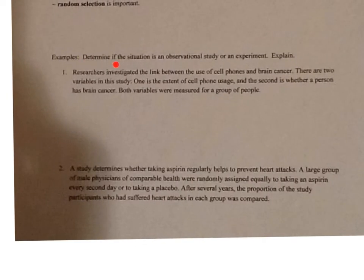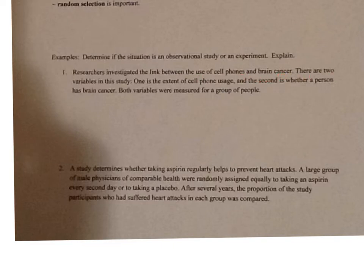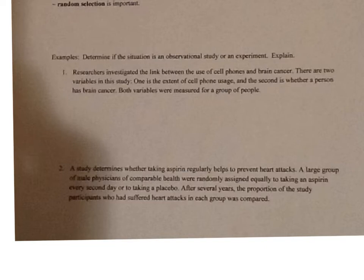We need to determine if each situation is an observational study or an experiment, and explain why. Number one: researchers investigate the link between the use of cell phones and brain cancer. There are two variables in this study — the extent of cell phone usage, and whether a person has brain cancer. Both variables are measured for a group of people. Was anything imposed on this group? No — they didn't tell the group they had to use a cell phone for five hours a day. So this would be an observational study.